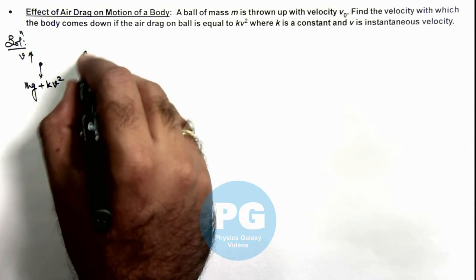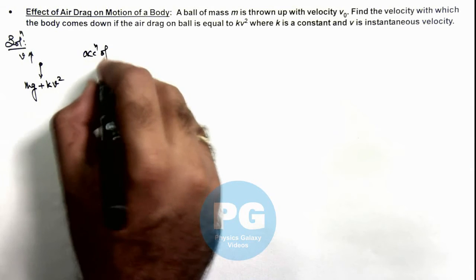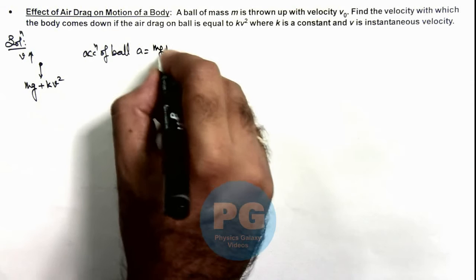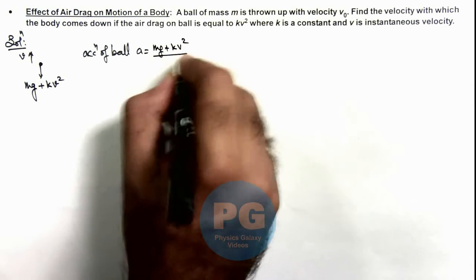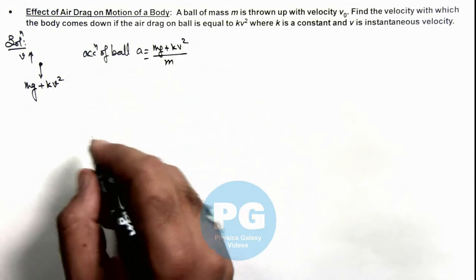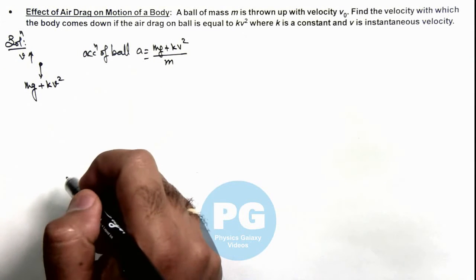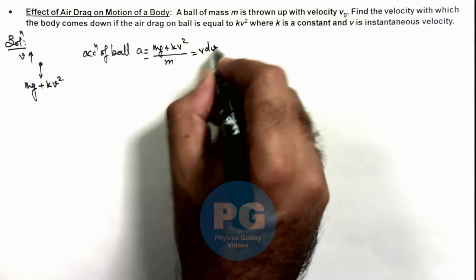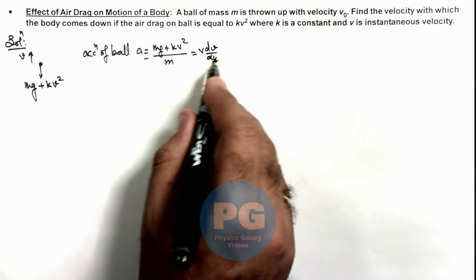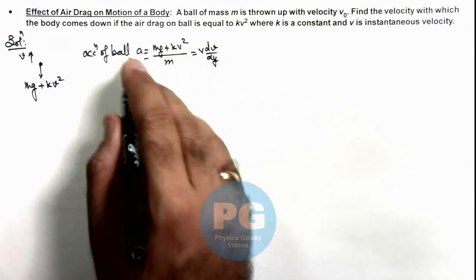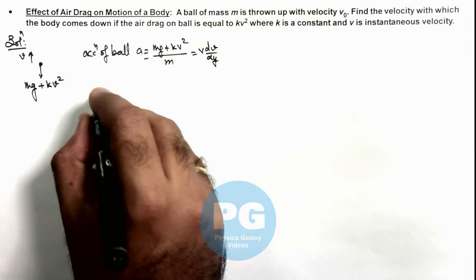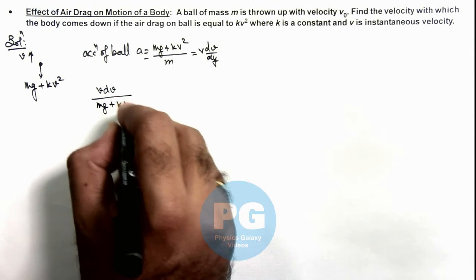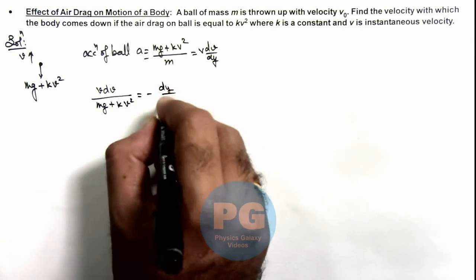So in this situation we can write the acceleration of ball as a_y is equal to mg plus kv² upon m, and obviously this will be taken with a negative sign because it is opposite to motion. Here we can write acceleration as v dv over dy. If at a height y it is taken, then further simplifying we can say it is v dv upon mg plus kv² is equal to minus of dy by m.